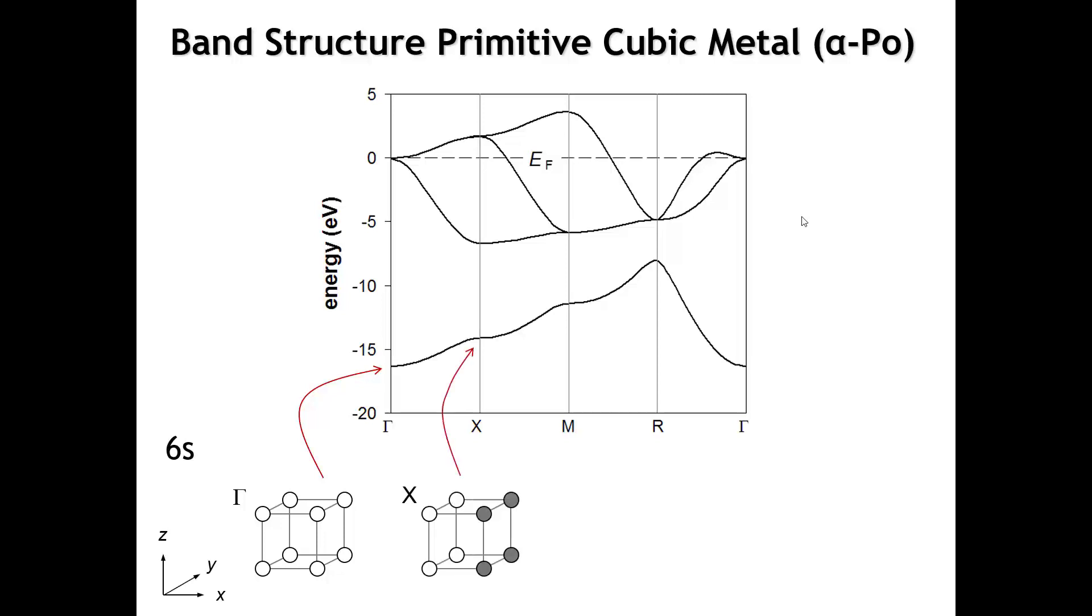If we go to X, the phases of the orbitals are going to change as we move along the X axis, but not in the Y or Z direction. Now, of the six nearest neighbors of polonium, two—those in the X direction—are going to be anti-bonding, and the other four are still going to be bonding. So the energy is still net bonding, but it's higher in energy than gamma.